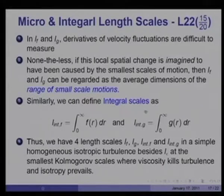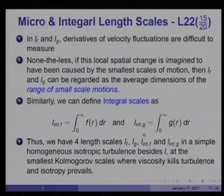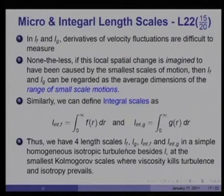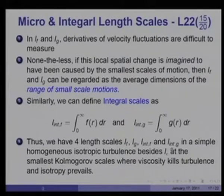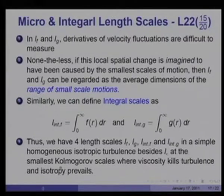If this local spatial change is imagined to have been caused by the smallest scales of motion, then lf and lg can be regarded as average dimensions of the range of small scale motions. Similarly, integrating f(r) from 0 to infinity gives integral scales l_int_f and l_int_g. Thus we have four length scales: the Taylor microscale in the longitudinal direction, the microscale in the transverse direction, the integral scale in the longitudinal direction, and the integral scale in the transverse direction — plus of course lε at the smallest Kolmogorov scales, where viscosity kills turbulence and isotropy prevails.